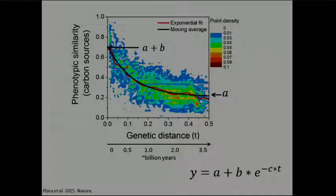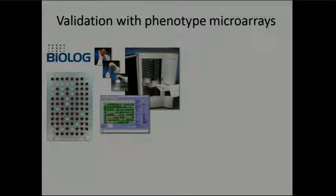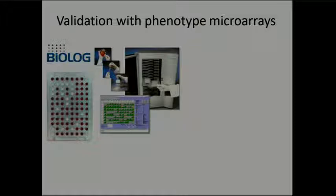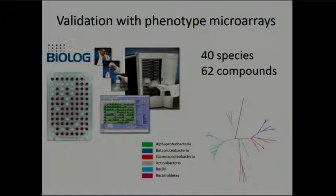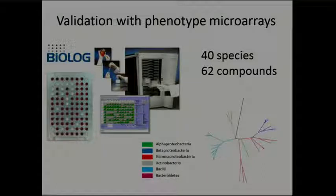Since this is all based on models, we wanted to validate experimentally using phenotypic microarray technology called Biolog. In this system, a plate has different nutrient sources in each well, and a molecule changes color if bacteria are actively growing or respiring. We collected this data for 40 species — an independent set from the simulation species — covering different branches of the phylogenetic tree and a wide range of evolutionary distances.